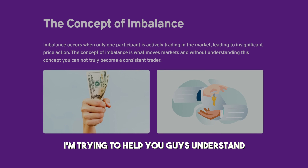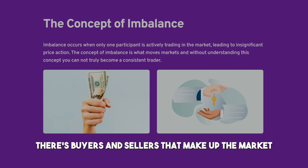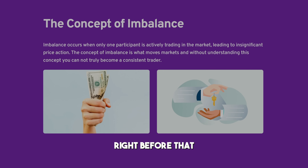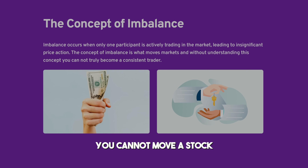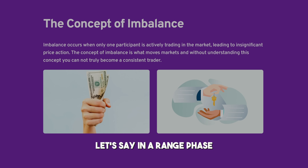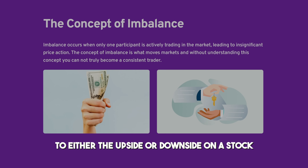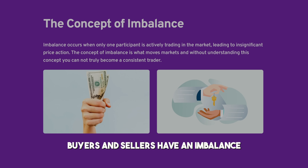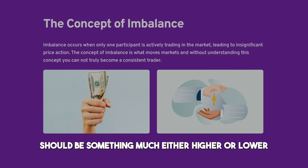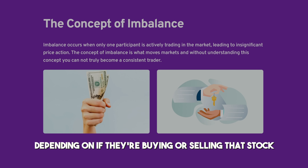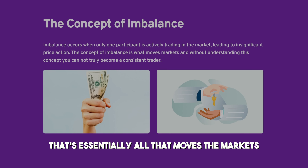What I'm trying to help you understand is why imbalance is so important. There are buyers and sellers that make up the market — before that, all you see is a chart on your screen, but when you add buyers and sellers, that's how the stock moves. You cannot move a stock without participants. When a stock is in a range phase, that means buyers and sellers believe the stock is at fair value. When you see a big move to the upside or downside, buyers and sellers have an imbalance and believe the stock's value should be much higher or lower. That's essentially all that moves the markets.